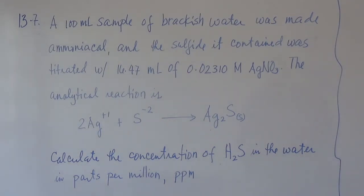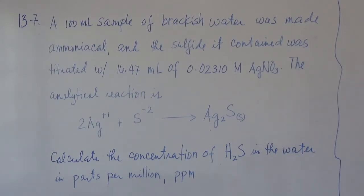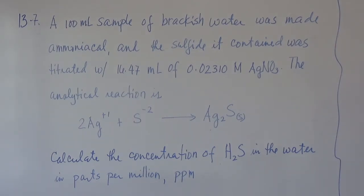We are given here 100 mL of a sample of brackish water. When we say brackish water, it's soaked water, but the salinity of brackish water is less than the salinity of salt water. In this problem, the brackish water was made ammoniacal so that the sulfide content in it will be precipitated in the form of silver sulfide.